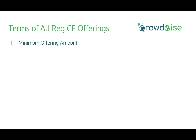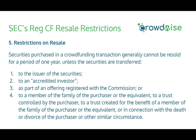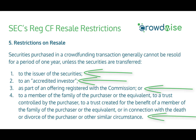All regulation crowdfunding offerings have some terms that are identical and required: a minimum offering amount (for example, $10,000), a maximum offering amount (up to $1.07 million), a minimum investment (typically $100 to $500 but can be as low as $10), a campaign deadline by which the minimum target must be achieved or else funds are returned, and resale restrictions. Under regulation crowdfunding, the SEC imposes that securities generally cannot be resold for one year unless transferred to the original issuer, to an accredited investor, as part of a registered offering, or to a family member or trust.